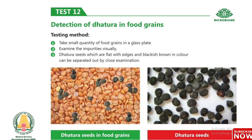Test 12: Detection of dhatura in food grains. Take a small quantity of food grains in a glass plate and examine visually. Dhatura seeds, which are flat with edges and blackish-brown in color, can be separated out by close examination.